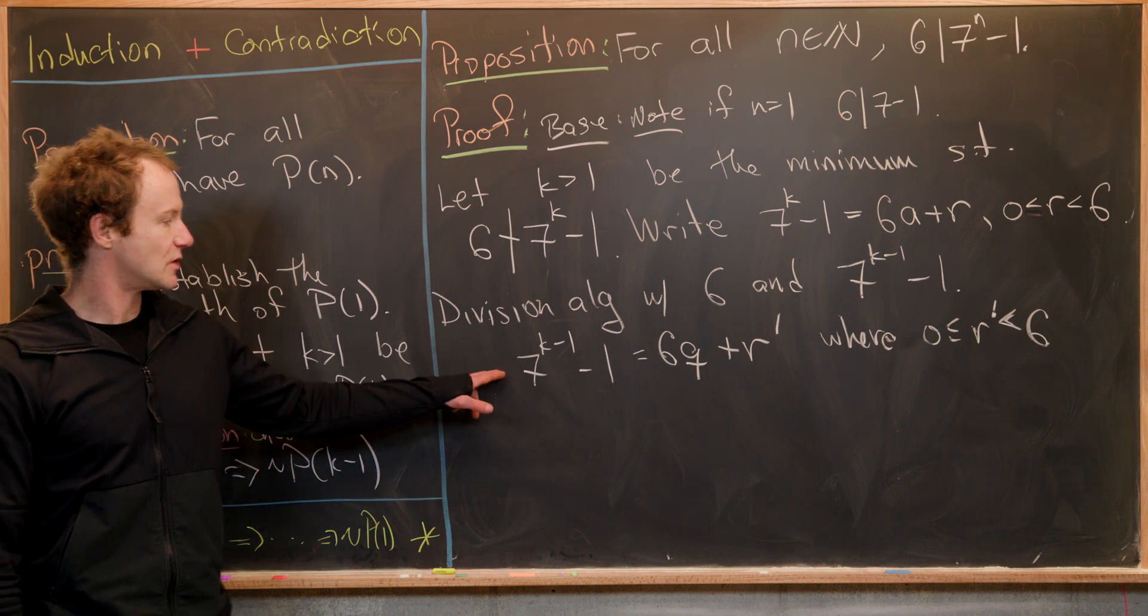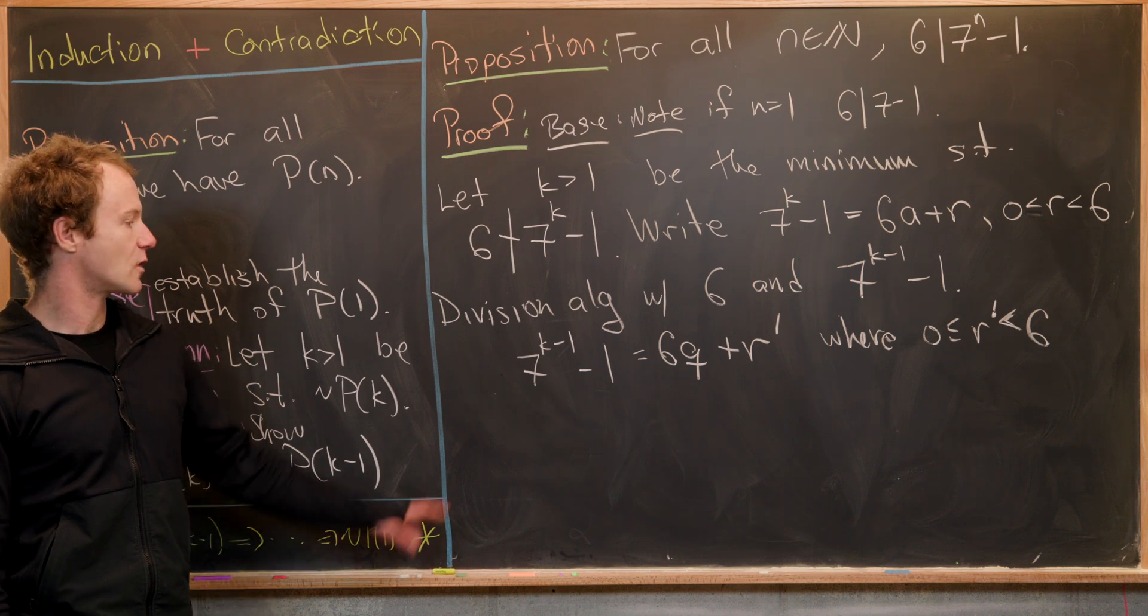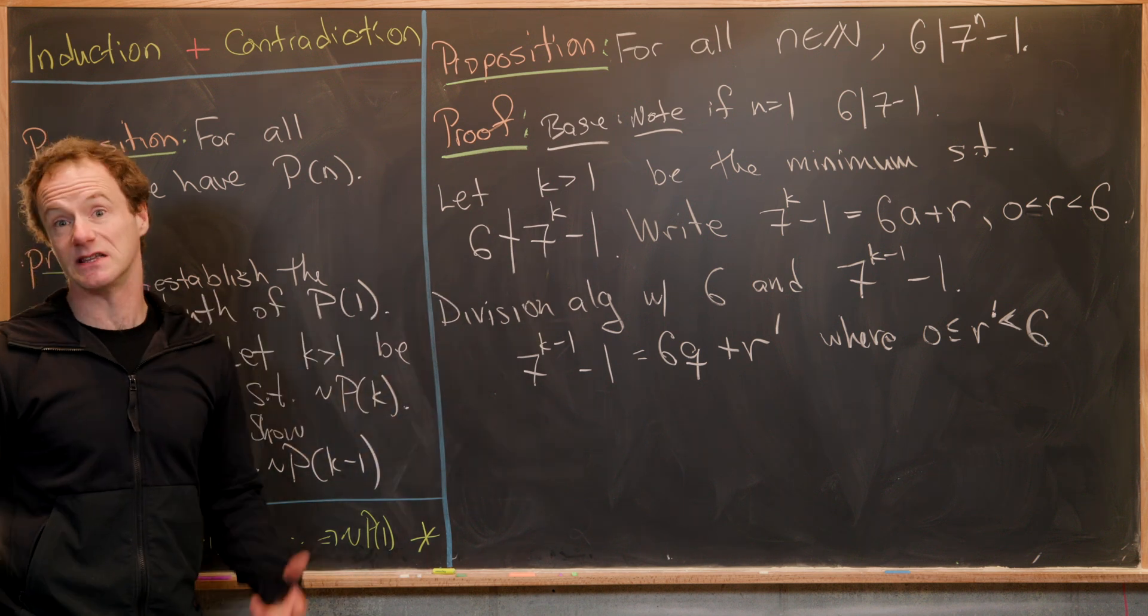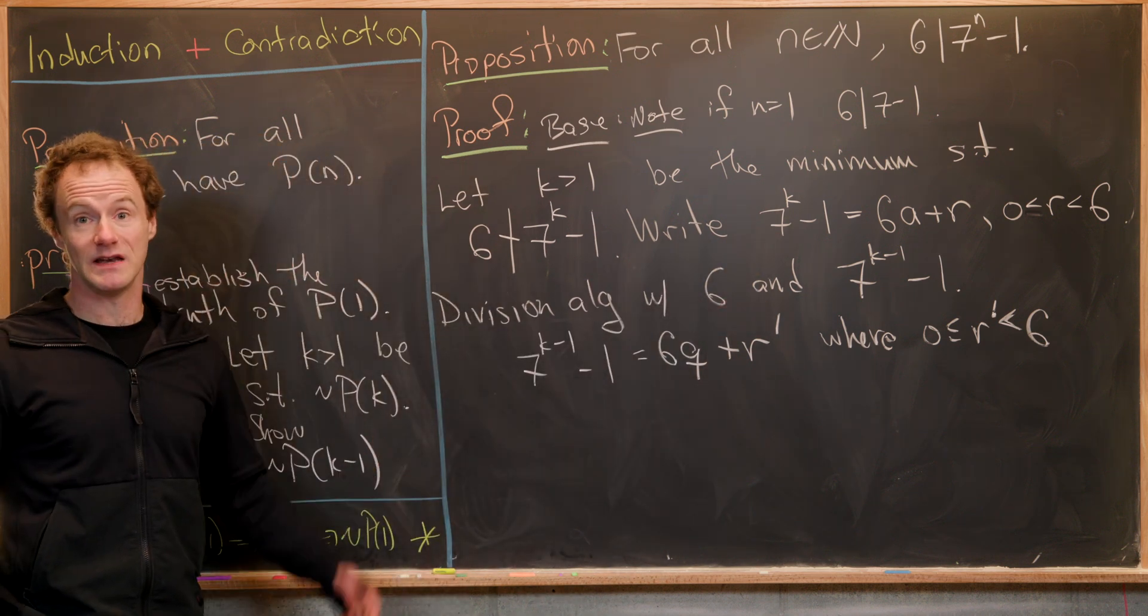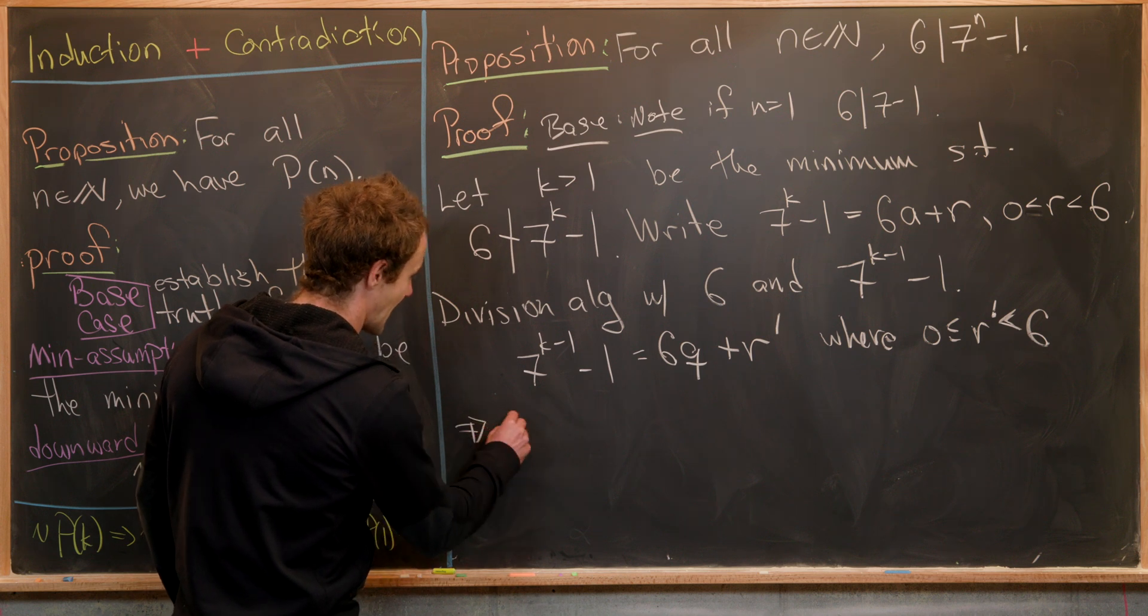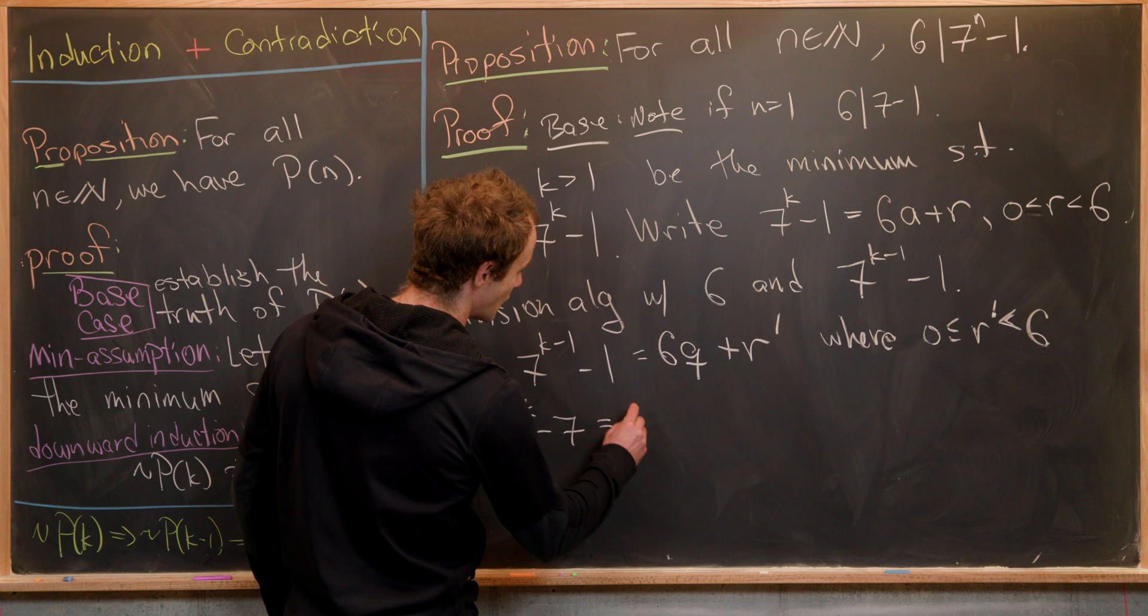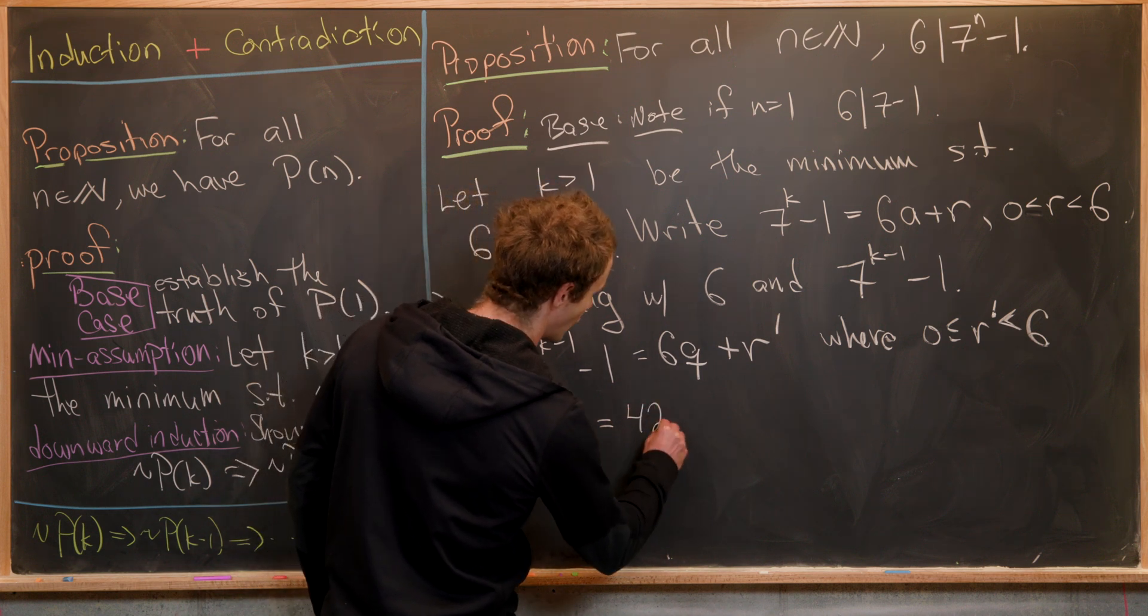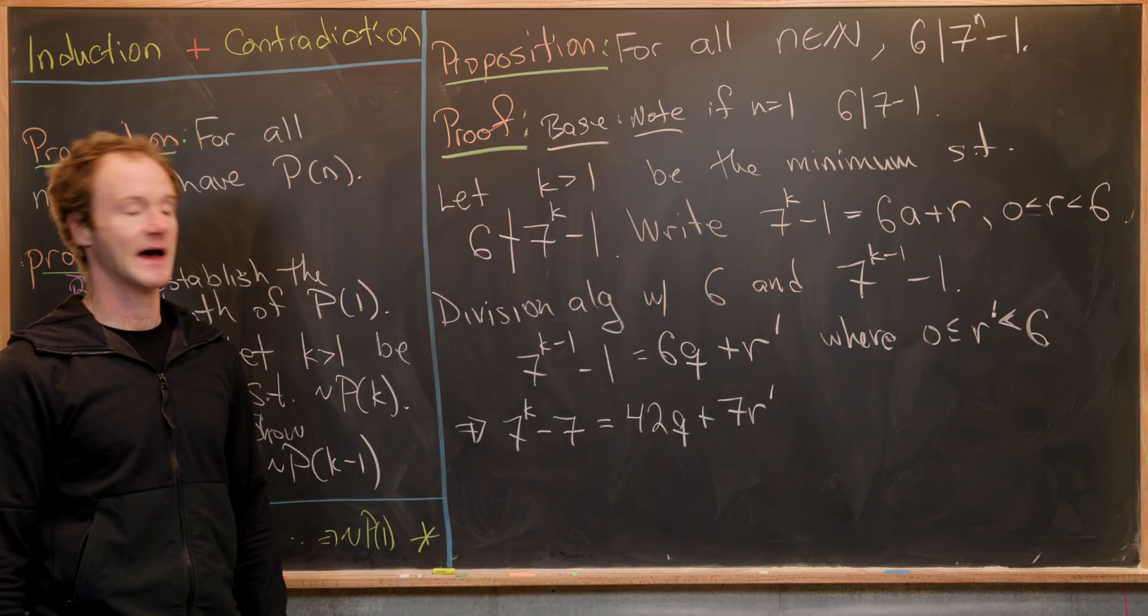Next, multiply both sides of this equation by seven in order to get seven to the k into this action, so we can maybe apply our induction hypothesis. After doing that, we get seven to the k minus seven equals 42q plus seven r prime.